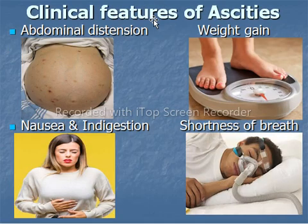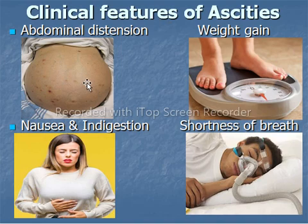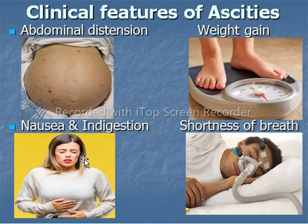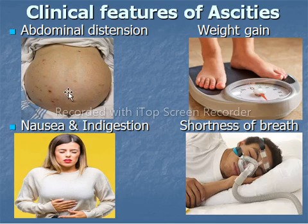The clinical features of ascites include abdominal distension, where the abdomen is abnormally swollen outward, or abdominal discomfort, weight gain, nausea and indigestion, and shortness of breath. Removing a large amount of fluid from the peritoneal space is done to make breathing more comfortable.